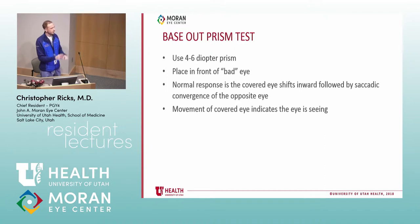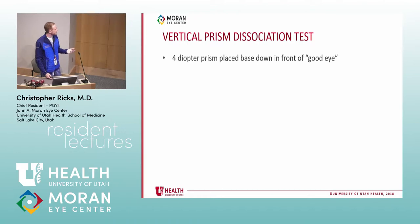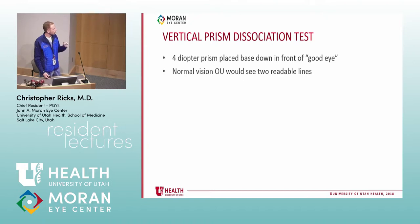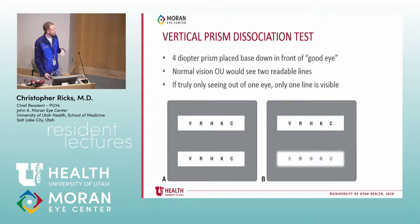Then vertical prism dissociation — this relies a little more on the patient telling you what they see. Put a 4-prism diopter base-down in front of the good eye this time. Normal vision would see two readable lines. If they're really not seeing out of one eye, they'll only see one line or the other will be blurred. This test requires a bit more patient cooperation.